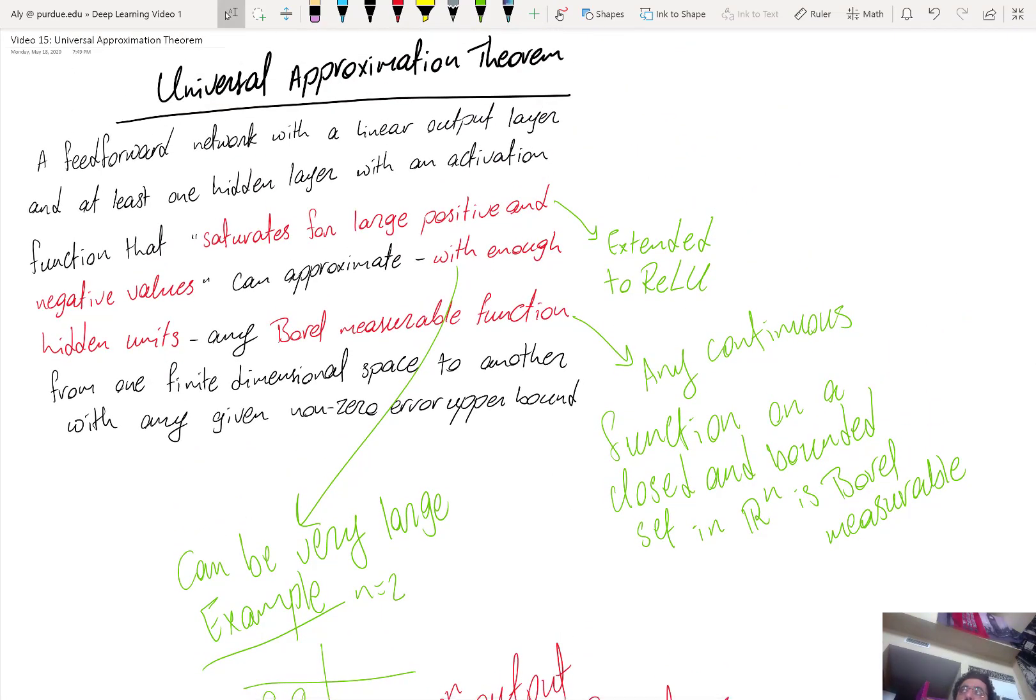So although the universal approximation theorem was very motivating about the potential of neural networks, even without any depth. So here we need only one hidden layer, but it doesn't tell us a lot about the computational complexity or the computational time needed to carry out this insight in practice.